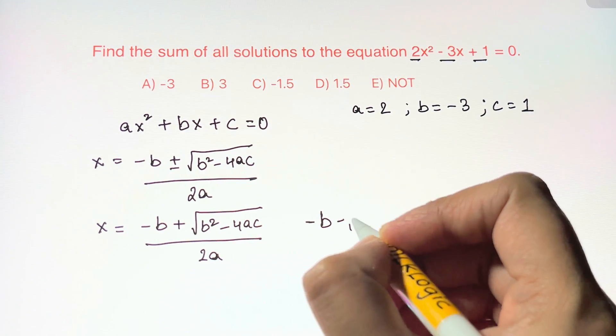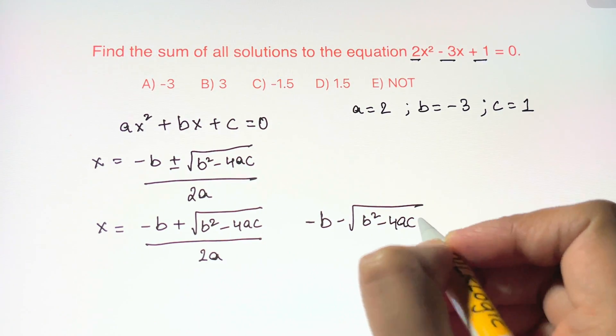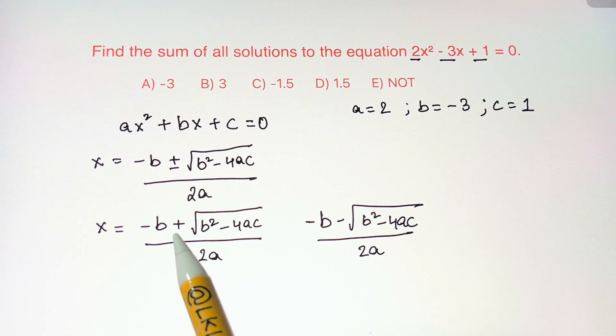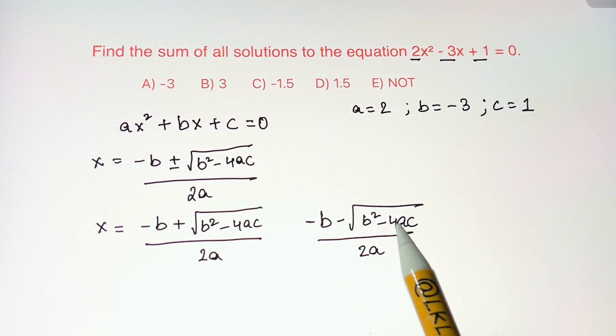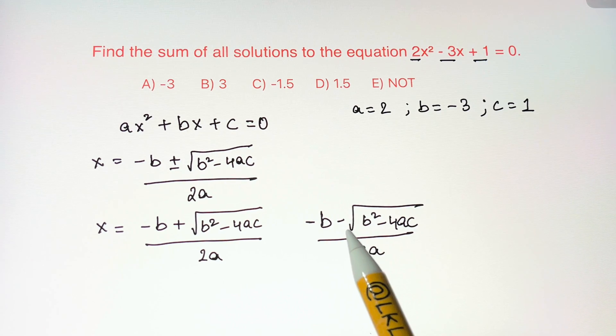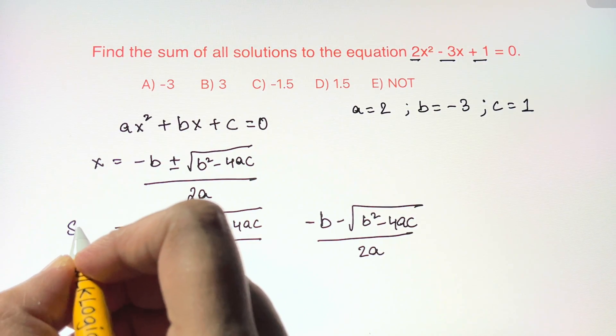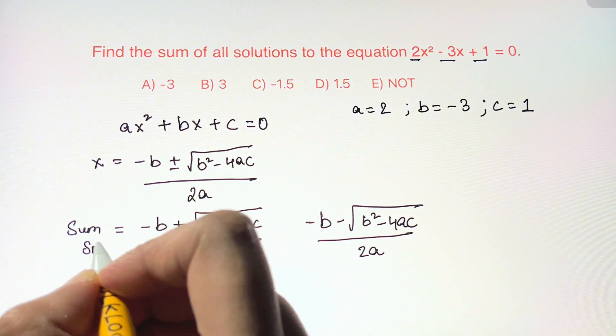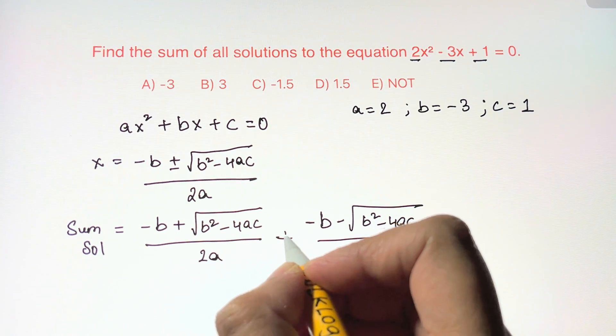Notice that when we use the quadratic equation we produce two different solutions. This is the case with positive and the second is the case with negative. So if you want to find the sum of the solutions, we just need to add these two results.